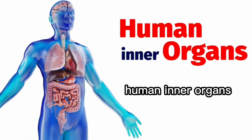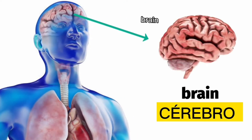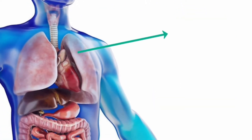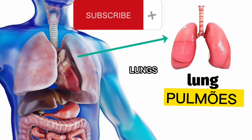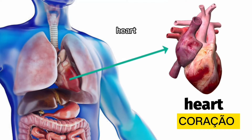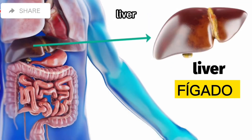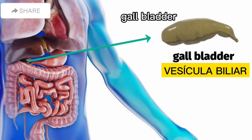Human inner organs. Brain. Lungs. Heart. Liver. Liver. Gallbladder.